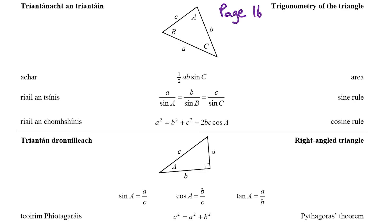Let's go to page 16 in the formula and tables book — the page with trigonometry formulas: area, sine rule, cosine rule, and Pythagoras's theorem. In our triangle we have one angle and two sides, trying to find a third side. The area formula is no use since we don't know the area. The sine rule requires two angles, but we only have one, so we can't use it. That leaves the cosine rule.